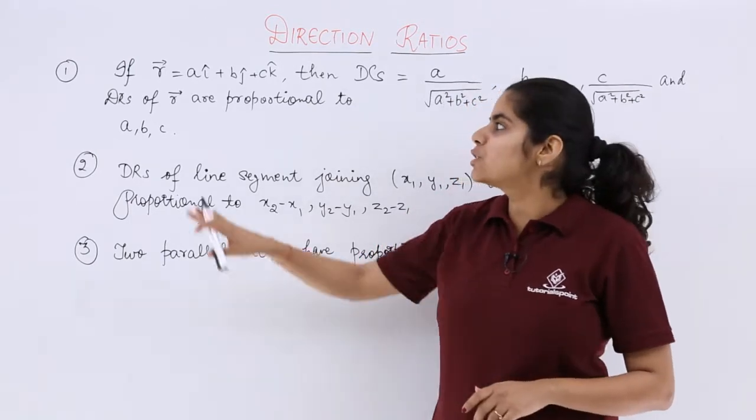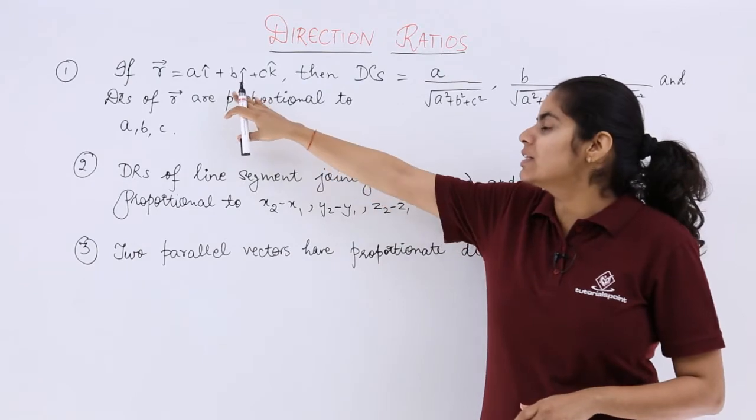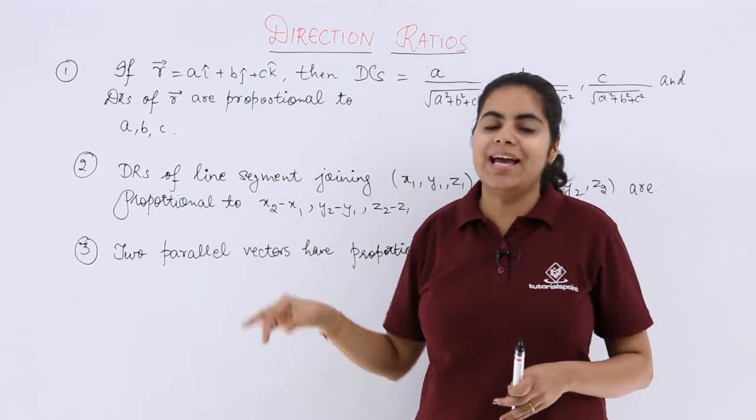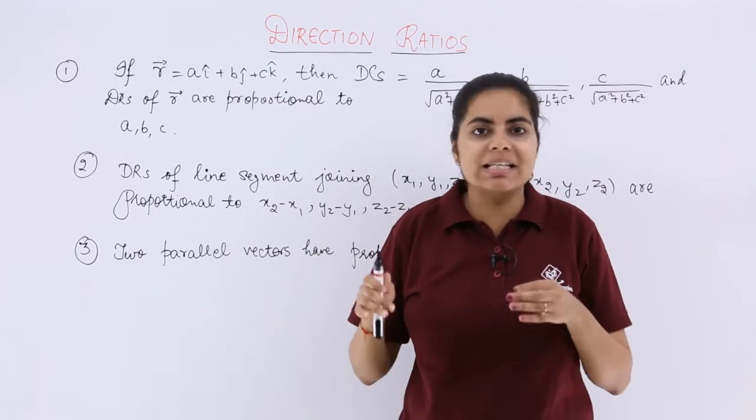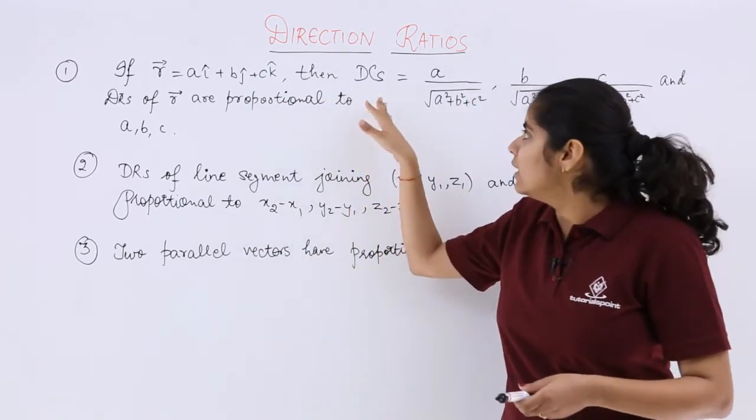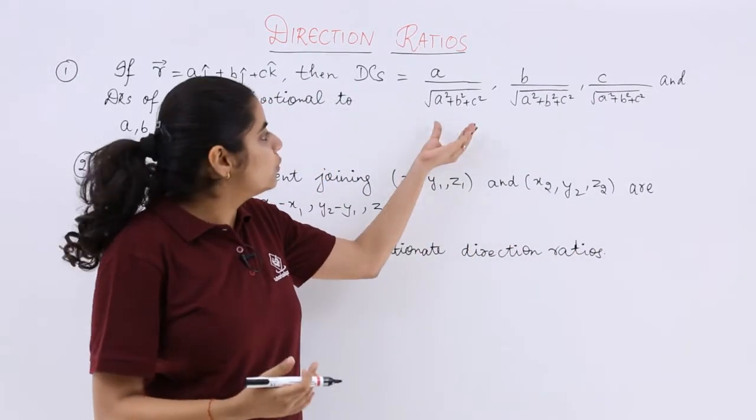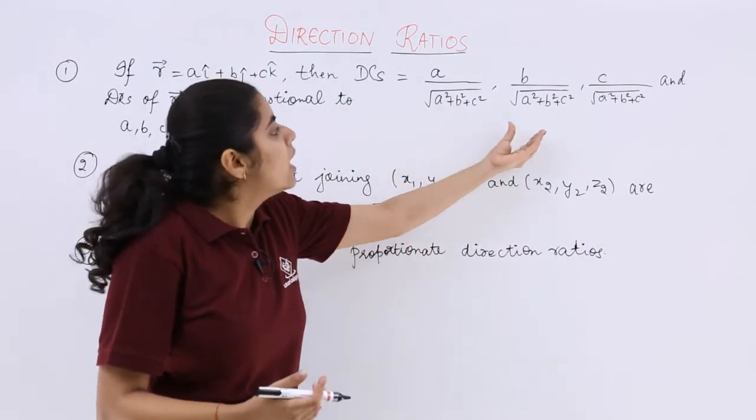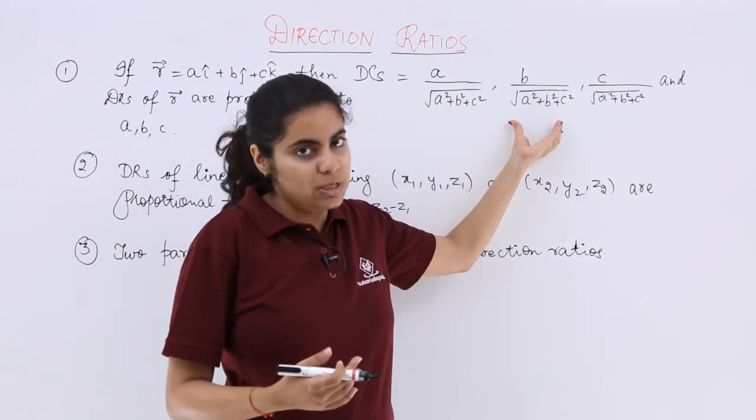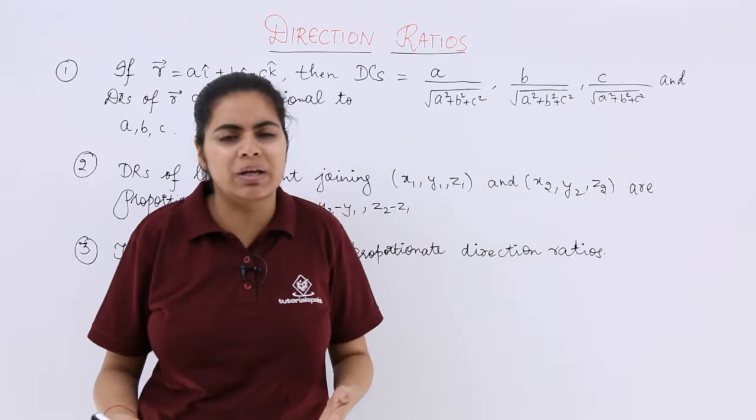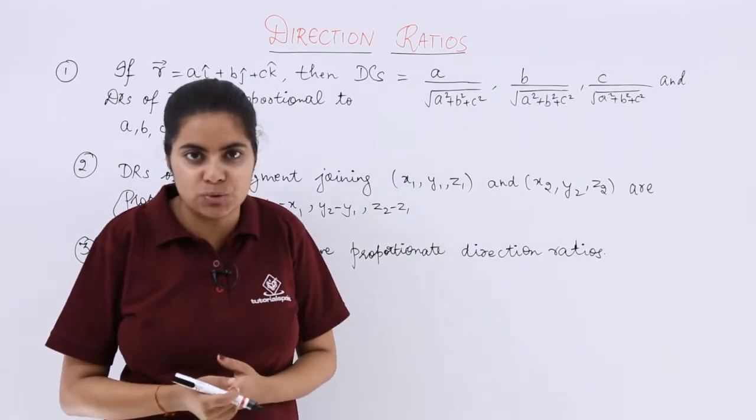Now let's see the first point. It says if r vector is equal to a i cap plus b j cap plus c k cap where i cap, j cap, k cap are the unit vectors along x axis, y axis, z axis, then DC, that means direction cosines, are what? a upon under root a square plus b square plus c square, b upon under root a square plus b square plus c square, c upon under root a square plus b square plus c square. This we already saw in the definition of direction ratios.